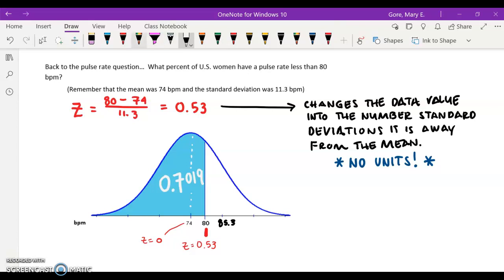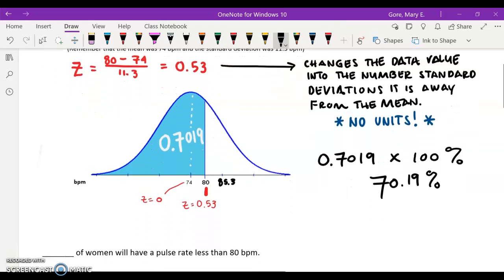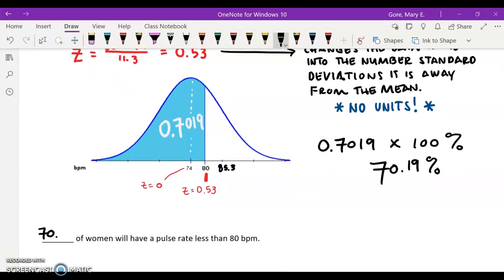If I take my probability here, 0.7019, and multiply it times 100%, that is 70.19%. What that tells me is that 70.19% of women will have a pulse rate less than 80 beats per minute. This is how we can work with a normal model and be any number of standard deviations away and retrieve an answer.